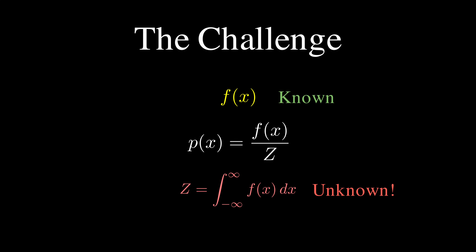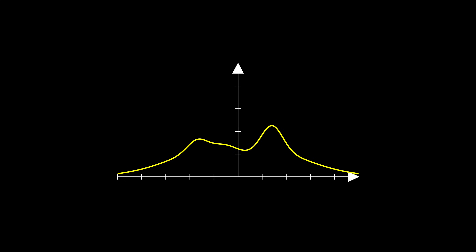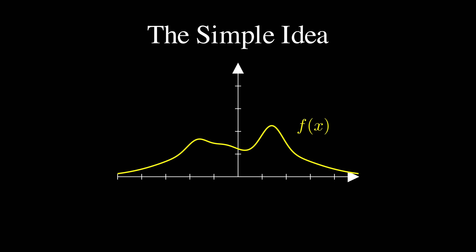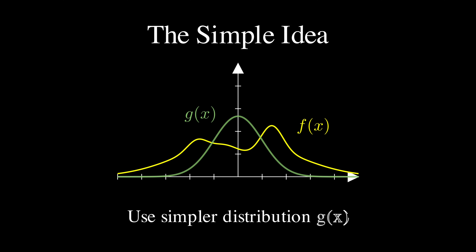Here's the brilliant idea that makes accept-reject sampling work. Instead of fighting with this difficult distribution directly, we're going to use a simpler distribution, g(x), that we already know how to sample from — like a normal distribution. The only requirements are that g covers the same domain as our target and that we can easily generate samples from it.